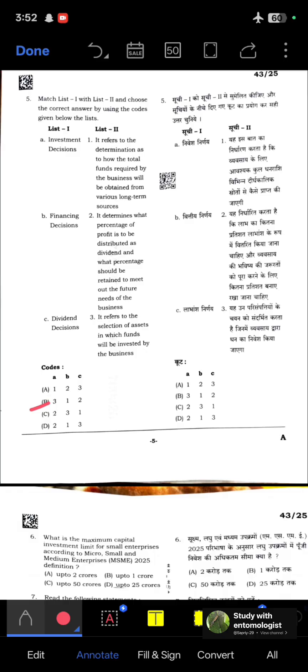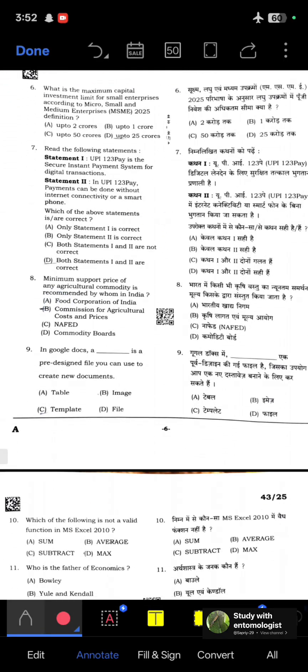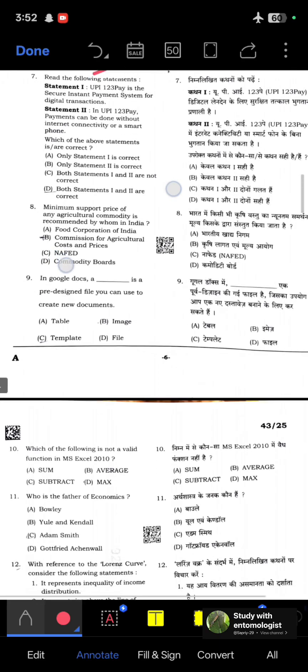What is the maximum capital investment limit for small enterprises according to MSME 2025 definition? Answer: up to 25 crores. Next: Read the following statements. Statement 1: UPI 123 Pay is a secure instant payment system for digital transactions. Statement 2: In UPI 123 Pay, payments can be done without internet connectivity or a smartphone. Both statements are true.